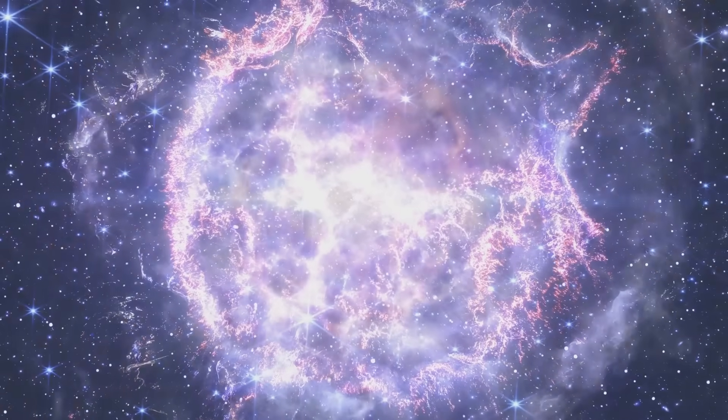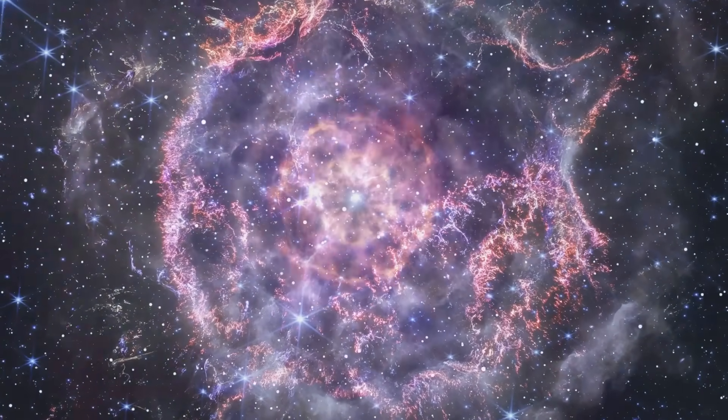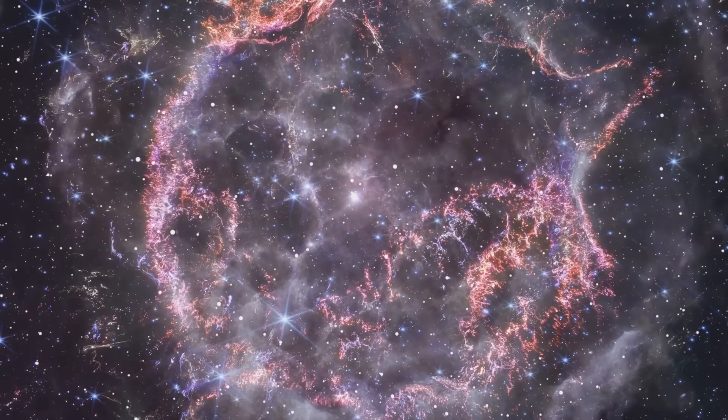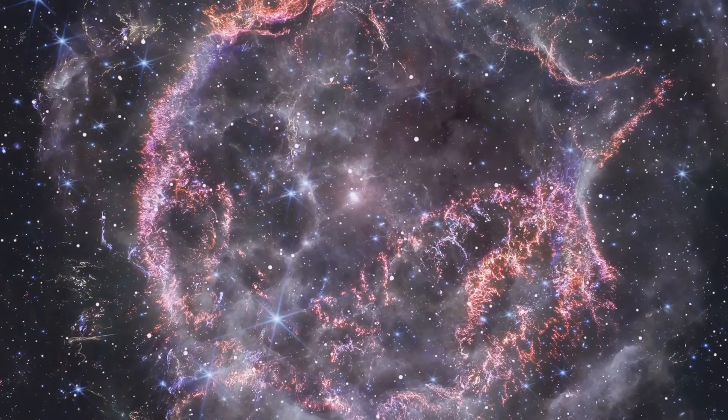When massive stars exhaust their nuclear fuel, they collapse under their own gravity, leading to a catastrophic explosion that blasts their outer layers into space. These expanding shells of gas and dust, enriched with heavy elements forged in the heart of the dying star, form supernova remnants.